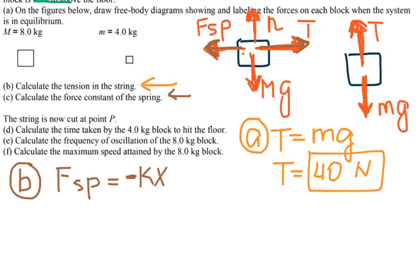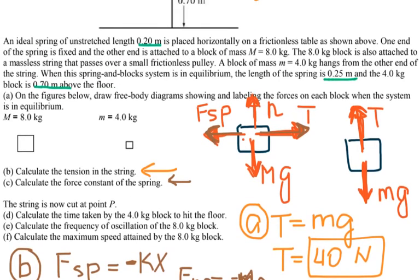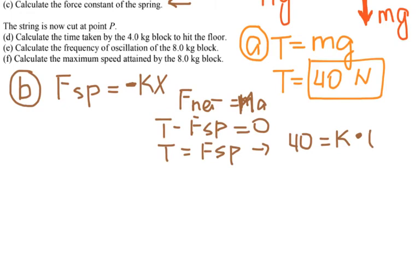Using Newton's second law: F_net = MA. Taking tension as positive minus the spring force equals zero (equilibrium), so tension equals spring force. That means 40 = k × x. Looking back at the problem, the spring was initially 0.2 meters and after the block was attached it stretched to 0.25 meters, so the stretch x = 0.05 meters.